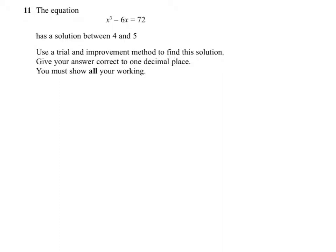With the trial and improvement method, we want to set out a little table. We're going to set out the values of x that we choose, the value of x cubed minus 6x, and then a final column to say whether the result is too small or too big.